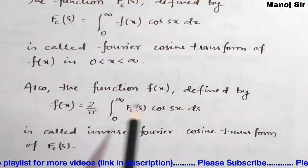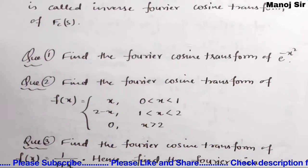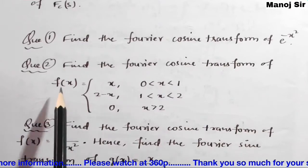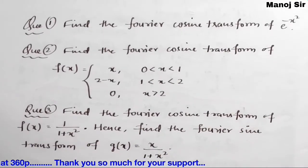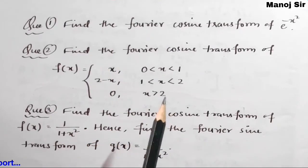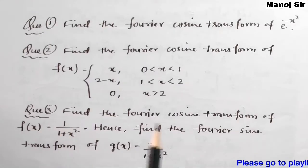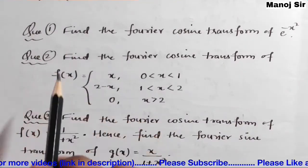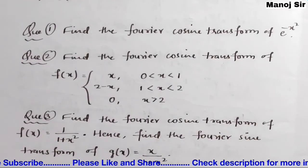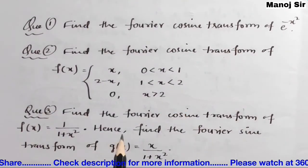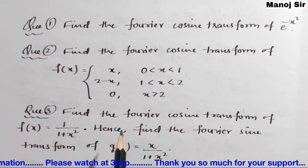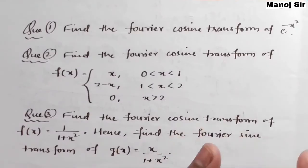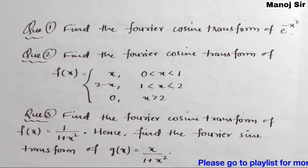You need to remember these two formulas because both are very important. In video number 8 we are going to solve the first problem, in video number 9 the second problem, and in video number 10 the third problem. The first and third problems are the most important. If you solve and practice all three problems, the Fourier cosine transform topic will be completely done for you.